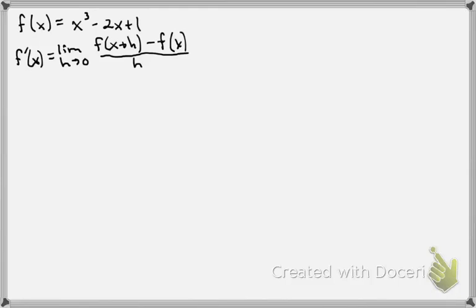We want to find the derivative of x cubed minus 2x plus 1 using our definition of the derivative. So the very first thing we have to do is set up our definition of the derivative with our function.